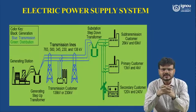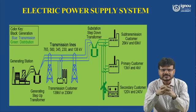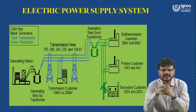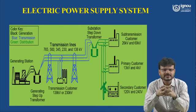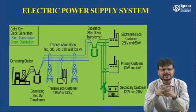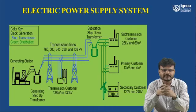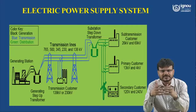Here you can see the block diagram of the electrical power system. In black color you can see the generation, in blue color it is the transmission, and green color is showing the distribution system. In black color there is a generating station — this may be a thermal power plant using coal, a nuclear power plant, or a hydro power plant. This voltage is generated at 11 kV; suppose any generating station is generating 110 megawatt power at 11 kV. Our aim is to transmit this generating power to the consumer via transmission lines.